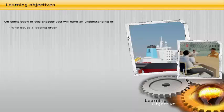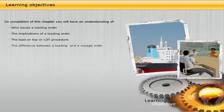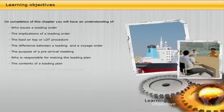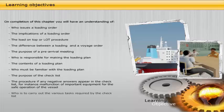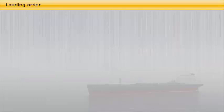On completion of this chapter, you will have an understanding of: who issues a loading order and the implications of a loading order; the load-on-top or LOT procedure; the difference between a loading and a voyage order; the purpose of a pre-arrival meeting; who is responsible for making the loading plan; the contents of a loading plan; who must be familiar with the loading plan; the purpose of the checklist; the procedure if any negative answers appear in the checklist, for instance malfunction of important equipment for the safe operation of the vessel; and who is to carry out the various tasks required by the checklist.